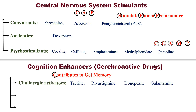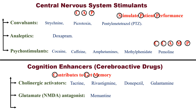In the mnemonic 'contributes to get memory': C stands for cholinergic activators, with examples such as tacrine, rivastigmine, donepezil, and galantamine. G stands for glutamate antagonists, with the example memantine. And M stands for miscellaneous drugs.